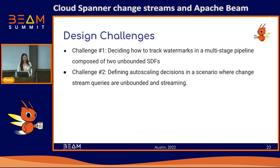There were several design challenges when developing the connector. The first was deciding how to track watermarks in a multi-stage pipeline — the final strategy was to use a Spanner metadata table, with read change stream partition function updating watermarks and detect new partition function querying the single low watermark value. The second challenge was defining autoscaling decisions where change stream queries were unbounded and streaming — the only way to impact autoscaling is to define the backlog estimate, and given that change stream queries are unbounded, defining this algorithm required significant tuning.